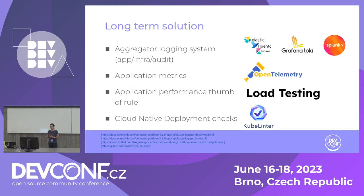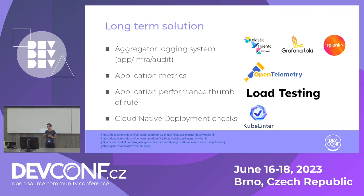A third long-term solution is load testing. This is commonly overlooked, especially because we are in such a fast-paced world where we need to deliver and update our applications all the time. We need to have load testing. This will actually improve performance in a Kubernetes world because you can predict and set resource requests and limits appropriately, which prevents outage and unavailability issues.